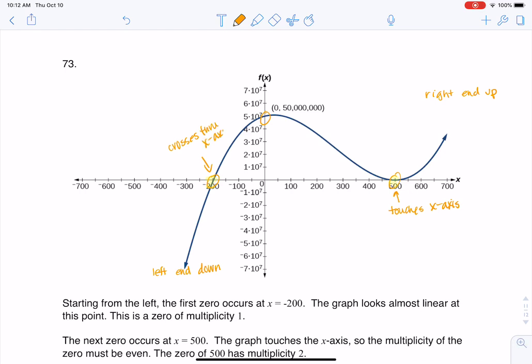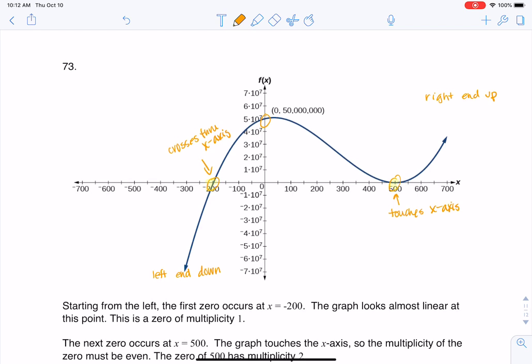And why I mention that is because I know the multiplicity here, at the negative 200, that's going to have an odd multiplicity. But over here at 500, we're going to have an even multiplicity.